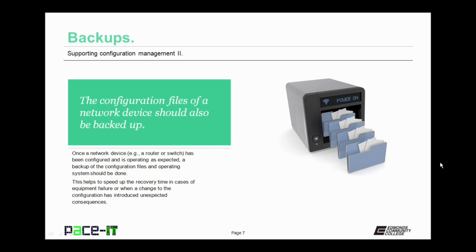Something else that needs to be backed up are your configuration files of network devices. Once a network device has been configured and it's operating as expected, a backup of the configuration files and operating system should be done. This helps to speed up the recovery time in cases of equipment failure, or when a change to the configuration has introduced unexpected consequences. Having the configuration file backups on hand means that you don't need to manually input it to recover in these situations.